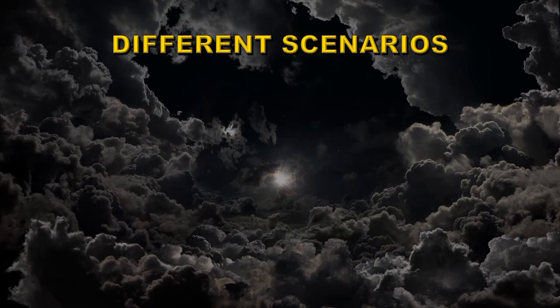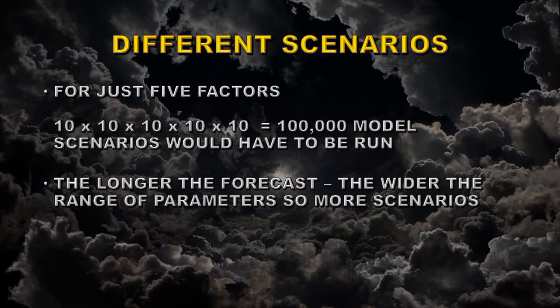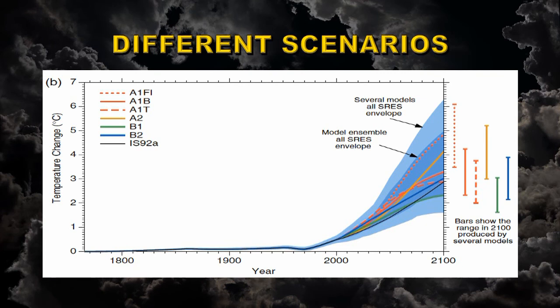So how do the climate modelers deal with all these different possibilities? Well, they run different scenarios. We had five factors — if we run just 10 scenarios for each one of those factors, then we'd have to run 100,000 climate scenarios to cover all the possibilities. The longer the forecast into the future, the wider the range of parameters, so more scenarios are needed. And perhaps only one of them will represent what the future holds, and you don't know which one. So what they do is an ensemble forecast: you take the average of all of those models under different scenario bases and find out what the most likely temperature increase is going to be. According to the IPCC, that's about three degrees centigrade, with an uncertainty of about plus or minus one.